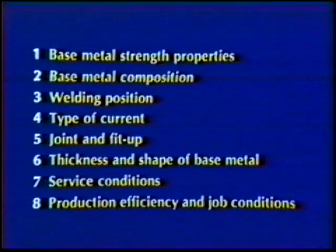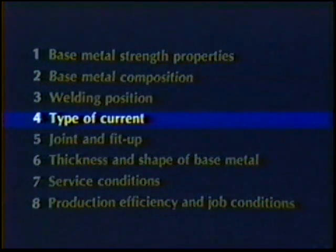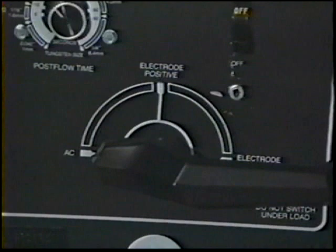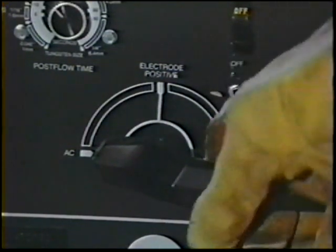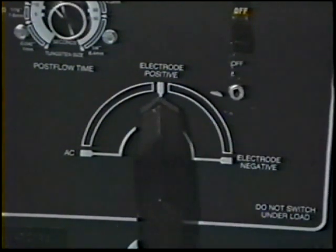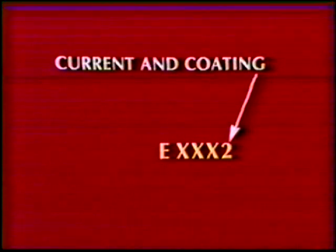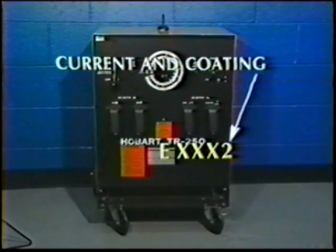Point four: welding current. Some electrodes are designed to operate best with direct current, some with alternating current, and some types will work with either. Refer to the last digit of the electrode classification and select the electrode that matches the type of power source to be used.